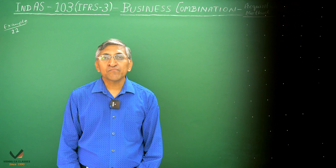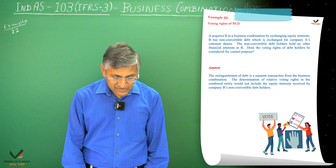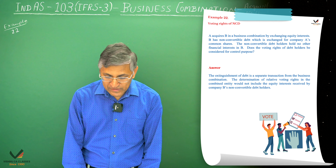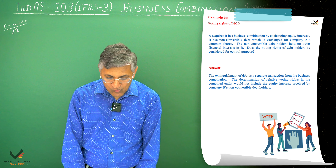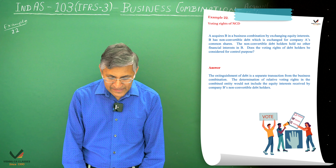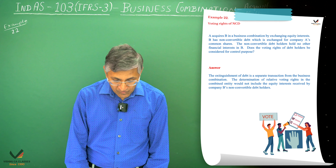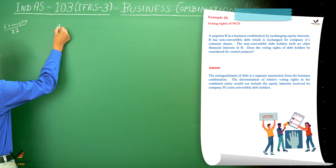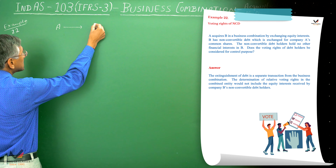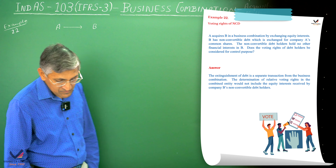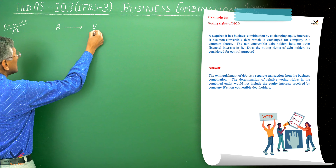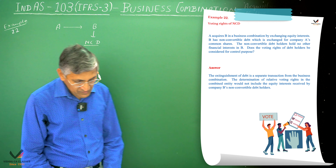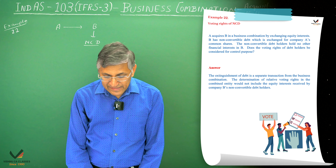Next, we have Example Number 27. In this question, it is given that A acquires B in a business combination by exchanging equity interests. B has non-convertible debentures, which are exchanged for Company A's common shares. It means that A has acquired B's business. B has non-convertible debentures, which are exchanged for Company A's common shares.